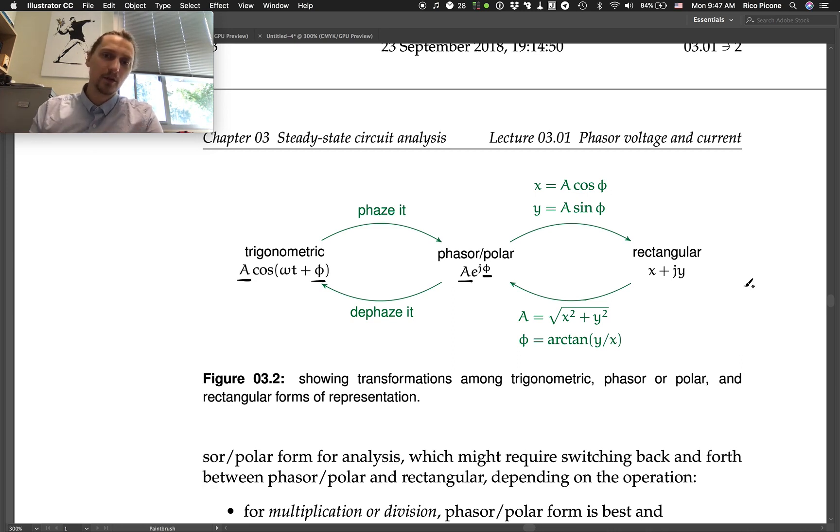To go back to phasor or polar form, we take x squared plus y squared, take the root of that, and we get the amplitude back. So, go back to amplitude, and then the phase is the arc tangent of the imaginary part over the real part. That's how you go.